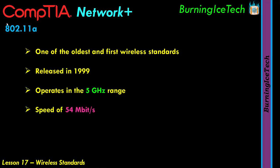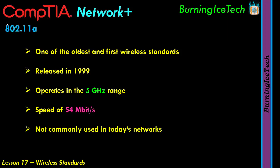The 802.11a standard operates in the 5 gigahertz range and has a speed of 54 megabits per second. You'll still find this standard being used even today, but it's not commonly used anymore — it's out there, but good luck finding it.